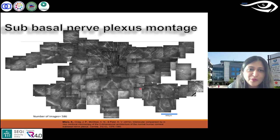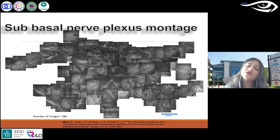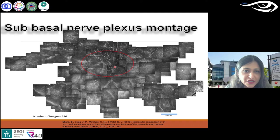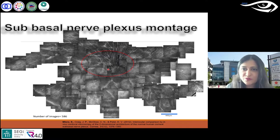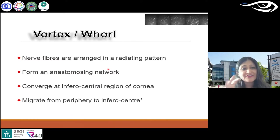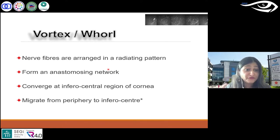We prepare a nice contiguous montage or large nerve map. The nerves are sort of parallel in the central cornea, and when going to inferior central they form nice anastomosing networks — almost coming together. These patterns change in a diseased cornea, especially keratoconus. These nerve fibers radiate and form a network, migrating from periphery to inferior central.